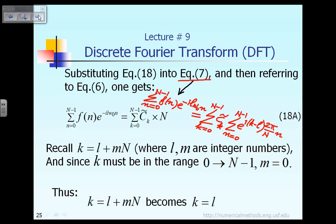According to my previous lecture, the innermost summation term — which I called capital A — depends on whether k minus l is a multiple integer of capital N or not. After considering both cases, capital A, which is the inner summation term, turned out to be equal to capital N. That is where we stopped last time, and that is why equation 7 is now shown as equation 18A, where the inner summation equals capital A, and capital A equals N.